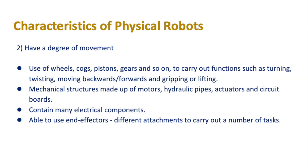The second characteristic of physical robots is the ability to move — they should have a degree of movement. This can be achieved through the use of wheels, cogs, pistons, gears and so on. These allow the robot to carry out functions such as turning, twisting, moving backwards and forwards, and gripping or lifting.